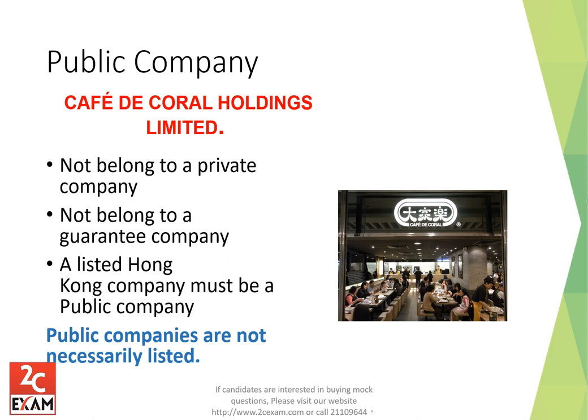A public company is not a private company and not a guaranteed company. It is owned by many shareholders with fewer restrictions on share transfers. A listed company in Hong Kong must be a public company, but not all public companies are listed. A good example is Café de Coral, a fast food restaurant chain listed in Hong Kong.